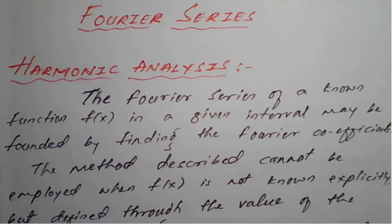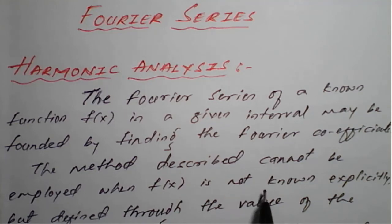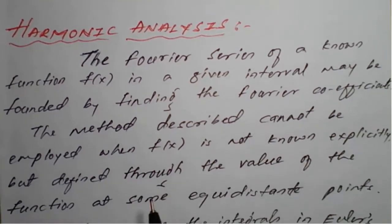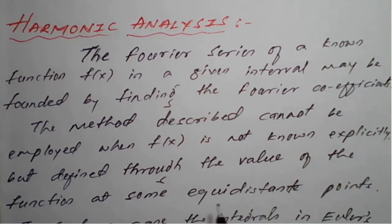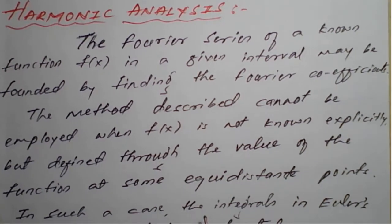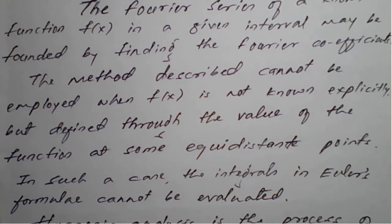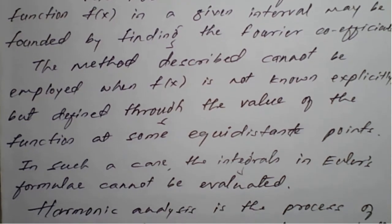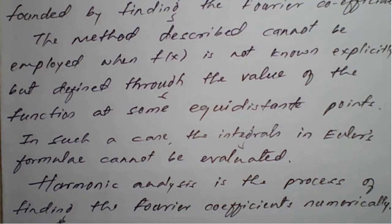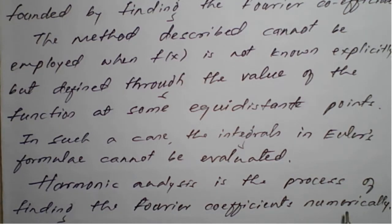With the help of those intervals we already found the values of Fourier coefficients, and with those coefficients we got the respective Fourier series. However, this method cannot be employed when f(x) is not known explicitly but is defined through values at some equidistant points. In such cases, the integral in Euler's formula cannot be evaluated, so we cannot apply Euler's formula directly.